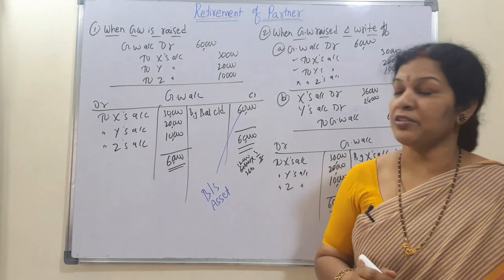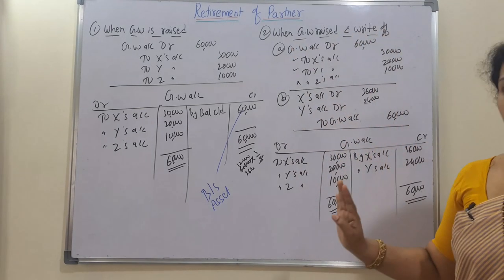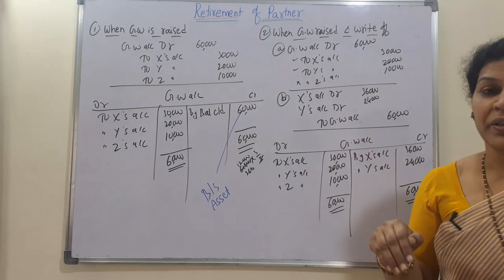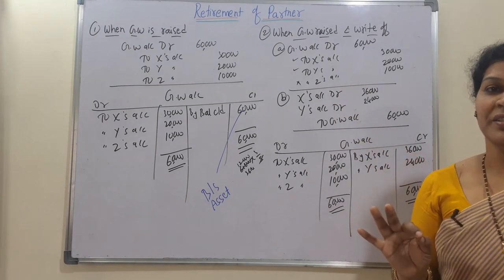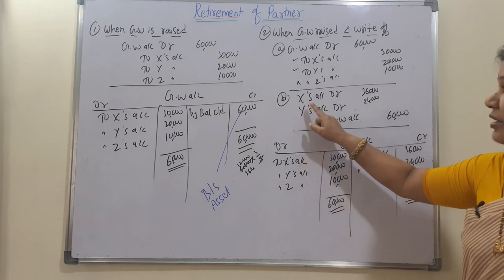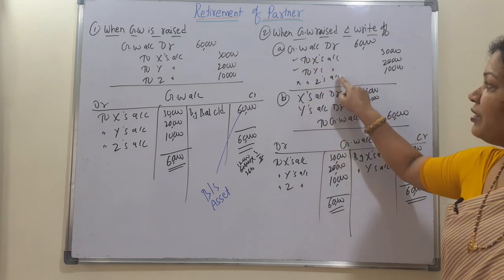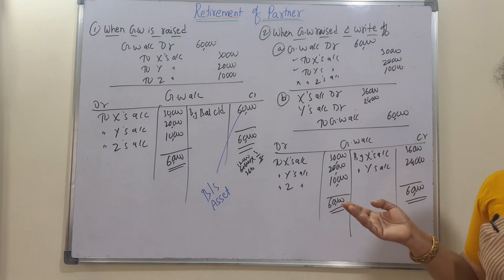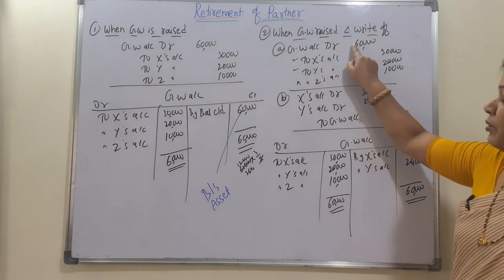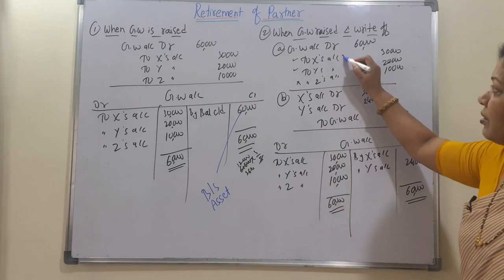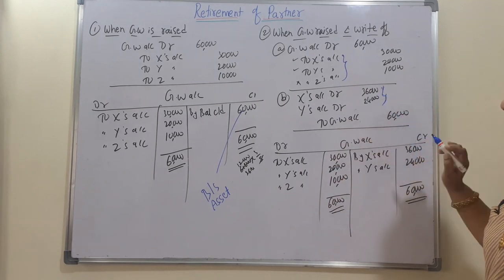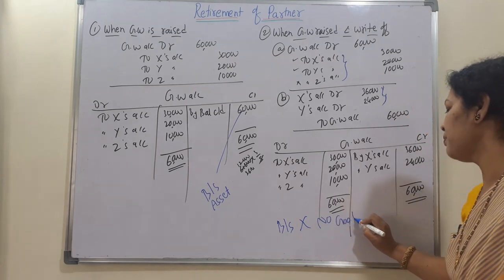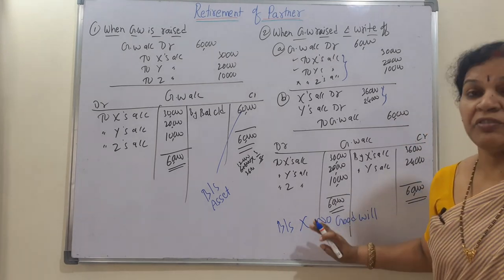In the second case, when goodwill is raised and written off: the raising entry is the same — Goodwill Account Dr. to X, Y, Z as per ratio 3:2:1. Then write-off: remaining partners X and Y debit goodwill in ratio 3:2. The goodwill account balances out. In the balance sheet, no goodwill will appear since it has been fully written off.